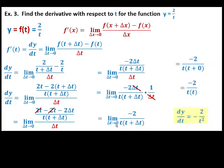So our derivative is dy/dt equals negative 2 over t squared.